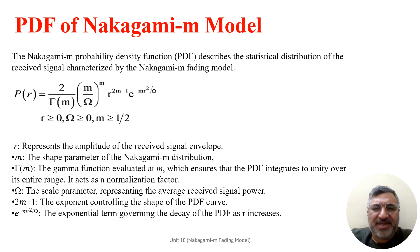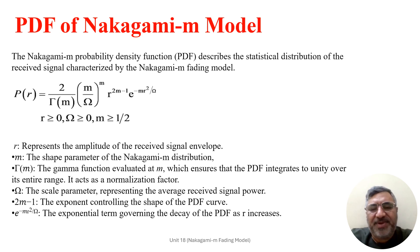Let us interpret the components of the Nakagami-M PDF. We can write P(R) as a function containing terms: P divided by k, raised to the power 2M minus 1, times E to the power of minus M times R-squared divided by omega. Here R should be greater than or equal to 0, omega greater than or equal to 0, and M is also greater than or equal to 0.5. Here R represents the amplitude of the received signal envelope, and the PDF describes the likelihood of observing a particular amplitude value R.